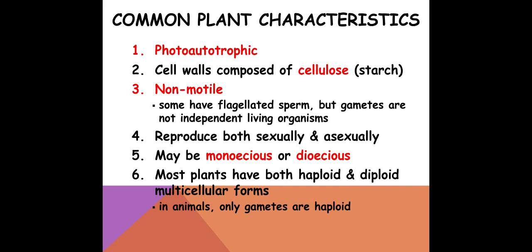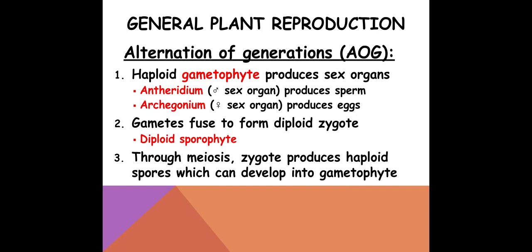Let's talk about that alternation of generations again. There are lots of resources on the lecture and lab D2L about this topic. Remember, you have a haploid gametophyte. The gametophyte makes the sex organs — the antheridium produces the sperm and the archegonium produces the eggs. Those gametes will fuse to make the diploid zygote. That zygote then grows into your diploid sporophyte, and then through meiosis we make spores that can grow into the gametophyte.